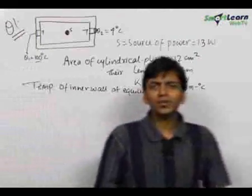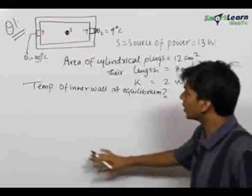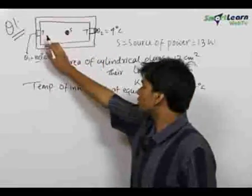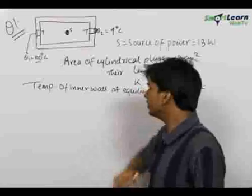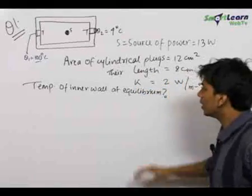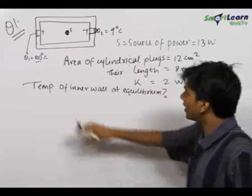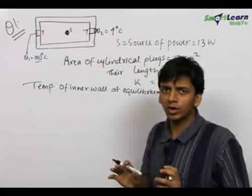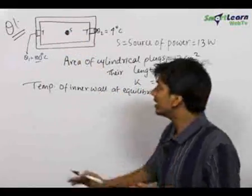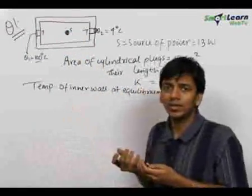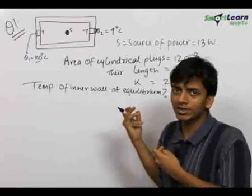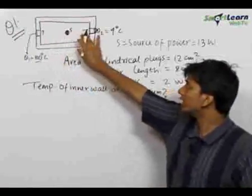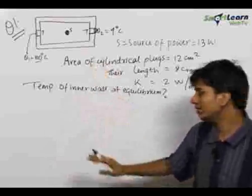Equilibrium here means thermal equilibrium, and at thermal equilibrium the temperature becomes constant. So let the constant temperature finally attained be equal to T. At thermal equilibrium, the net heat being stored inside the chamber becomes equal to zero — that is, the net heat coming inside the system equals the net heat going out, meaning the rate at which heat enters equals the rate at which heat leaves.